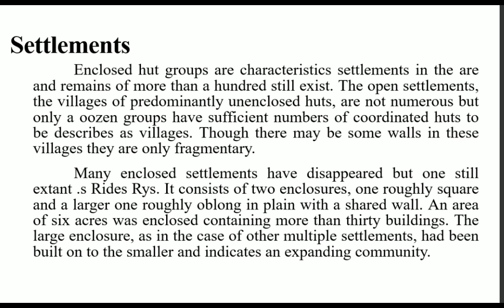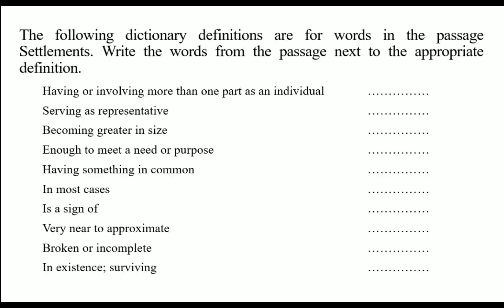In plain with a shared wall, an area of six acres was enclosed containing more than 30 buildings. The large enclosure, as in the case of other multiple settlements, has been built onto the smaller and indicates an expanding community. The following dictionary definitions are for words in the passage on settlements. Write the words from the passage next to the appropriate definition.